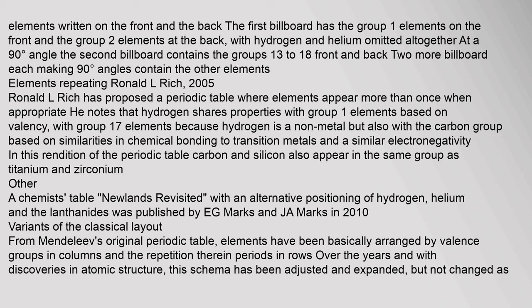Other: A chemist's table with an alternative positioning of hydrogen, helium, and the lanthanides was published by E.G. Marx and J.A. Marx in 2010. Variants of the classical layout: from Mendeleev's original periodic table, elements have been basically arranged by valence groups in columns and the repetition therein — periods in rows — over the years, and with discoveries in atomic structure.